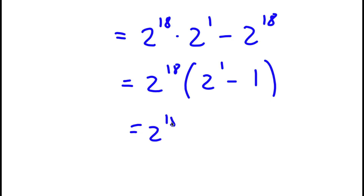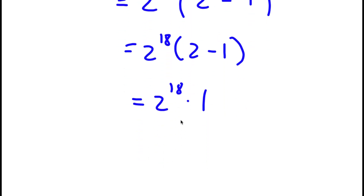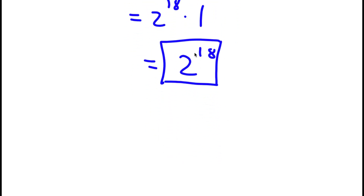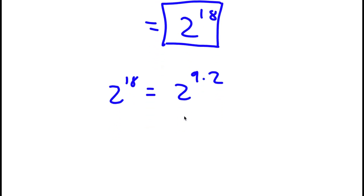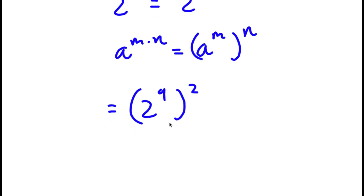From here I can factor out 2 to the power of 18, giving 2 to the power of 18 times the quantity 2 to the power of 1 minus 1. Now 2 to the power of 1 is simply 2, so I have 2 to the power of 18 times 2 minus 1, which equals 2 to the power of 18 times 1, which is simply 2 to the power of 18. To simplify further, 2 to the power of 18 is the same as 2 to the power of 9 times 2, which equals 2 to the power of 9 all squared. Now 2 to the power of 9 is 512.